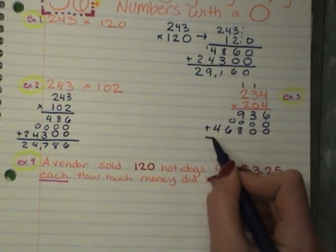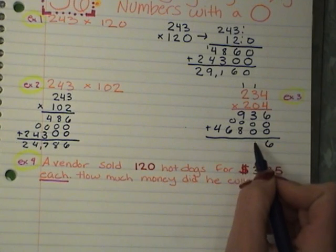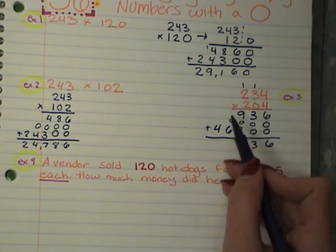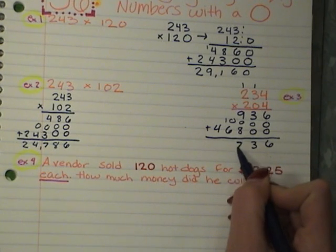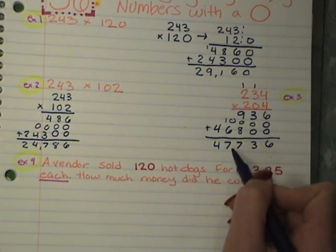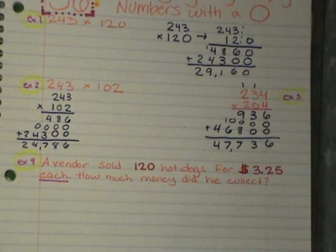I'm going to add them all up. 6, 3. 9 plus 8 is 17. 6 plus 1 is 7. 4 plus nothing is 4. 1, 2, 3. 47,736.